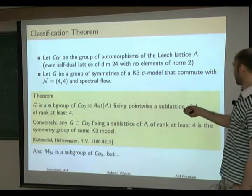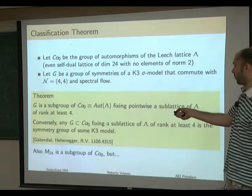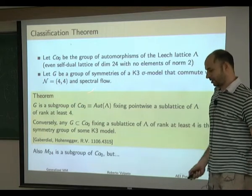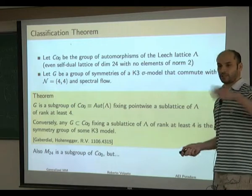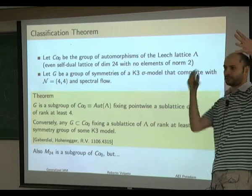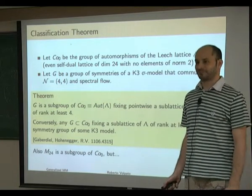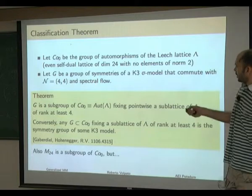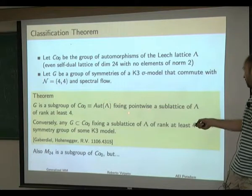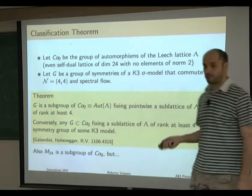More precisely, the theorem states: suppose G is the group of symmetries of a nonlinear sigma model on K3 that commutes with the N=4 superconformal algebra and with the spectral flow. This is a technical condition to exclude some symmetries acting by +1 on the Neveu-Schwarz sector and -1 on the Ramond sector. The result is that such a group is always a subgroup of the Conway group Co0, and in particular a subgroup that fixes pointwise a sublattice of the Leech lattice of rank at least 4.